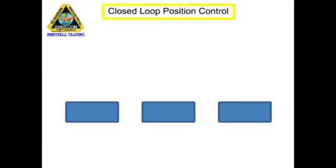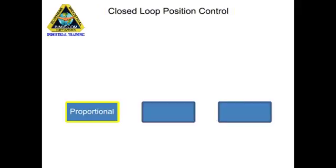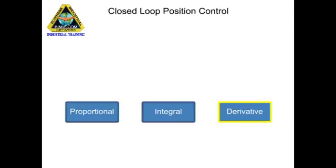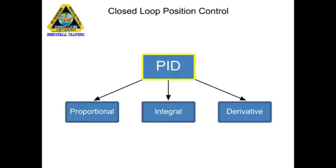A closed loop control system for position control is comprised of proportional, integral, and derivative circuits and is often referred to as a PID.